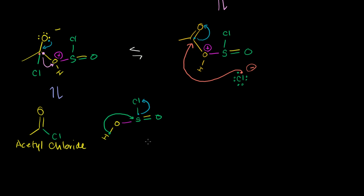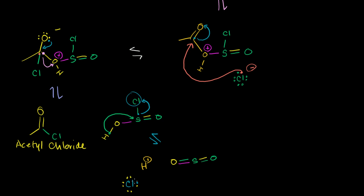The acetyl chloride isn't doing anything more at this point. We now have a hydrogen proton floating around, the sulfur is double bonded to both oxygens forming sulfur dioxide, and the chlorine has nabbed an electron giving it a negative charge. The final step is the chlorine giving one of its electrons to the hydrogen to form hydrogen chloride.